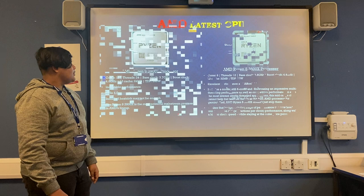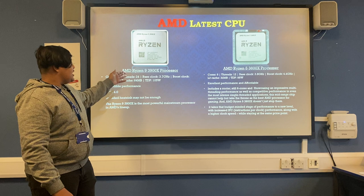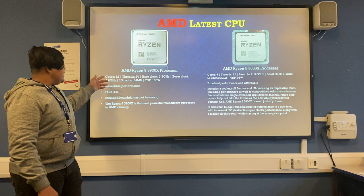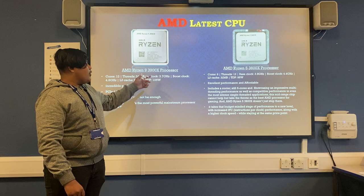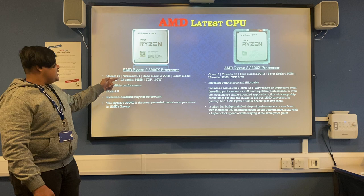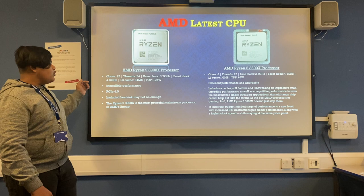Now let's talk about the AMD latest CPUs. The AMD Ryzen 9 3900X processor has 12 cores, 24 threads, a base clock of 3.7 GHz, a boost clock of 4.6 GHz, L3 cache of 64 MB, and a TDP of 105W. It gives you incredible performance and is the most powerful mainstream processor in AMD's lineup.